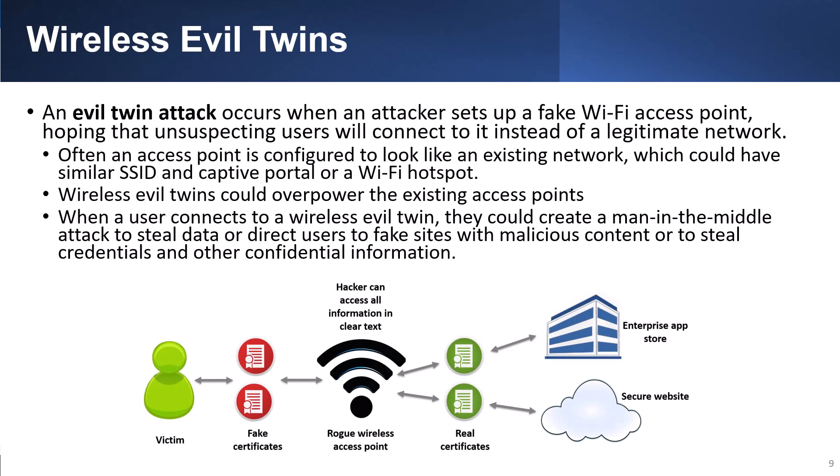An evil twin attack occurs when an attacker sets up a fake Wi-Fi access point, hoping that unsuspecting users will connect to it instead of a legitimate network. Often an access point is configured to look like an existing network, which could have similar SSIDs and a captive portal or a Wi-Fi hotspot. Wireless evil twins could overpower the existing access points. When a user connects to a wireless evil twin, the attacker could create a man-in-the-middle attack to steal data, direct users to fake sites with malicious content, or steal credentials or other confidential information.